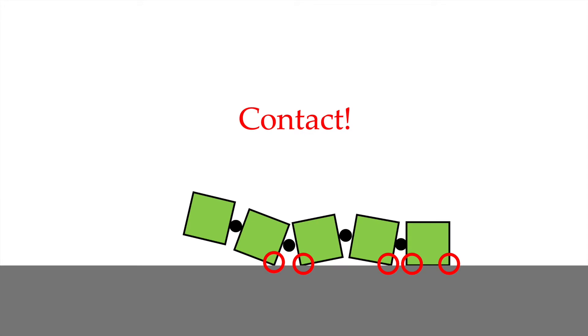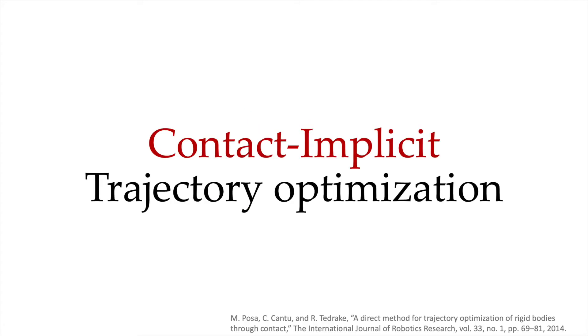We want to use trajectory optimization to achieve this goal. However, the challenge here is contact. As we notice, any point along the rope can make contact with any point on the table at any given time, which makes it very hard for trajectory optimization. Therefore, we are using the contact implicit trajectory optimization formulation.